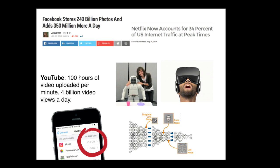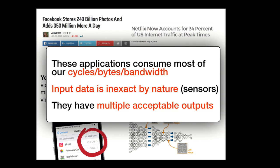What kind of applications do we use computers for today? If you look at things like uploading pictures to the web — in fact, today it's more like more than half a billion pictures are uploaded to Facebook every day. More than a third of internet traffic is Netflix, especially when House of Cards is released. YouTube has 100 hours of video per minute and four billion video views a day. Most phone data goes to music, photos, and video.